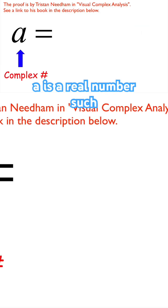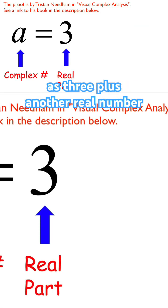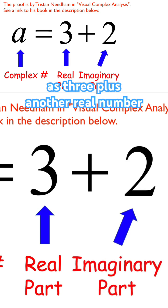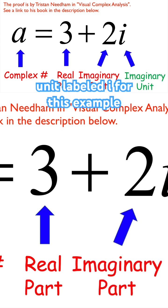A complex number, let's call it a, is a real number, such as 3, plus another real number, such as 2, times the imaginary unit labeled i.